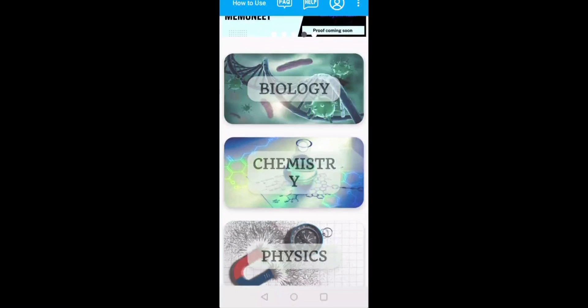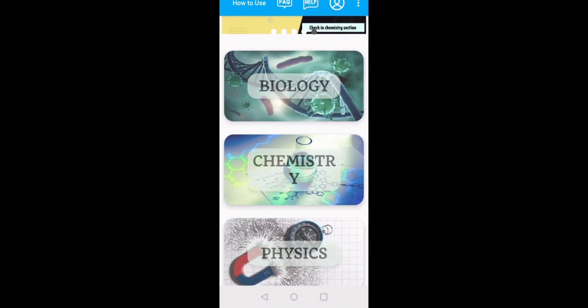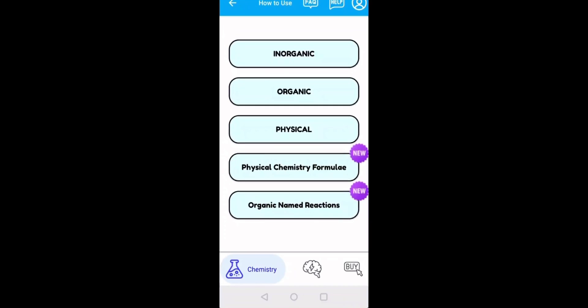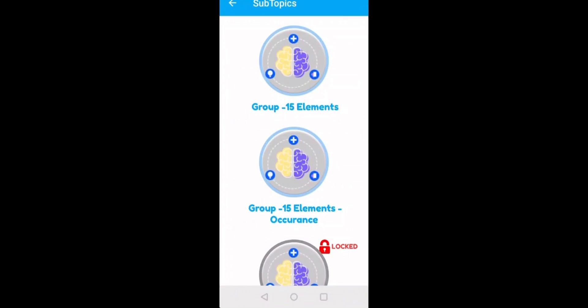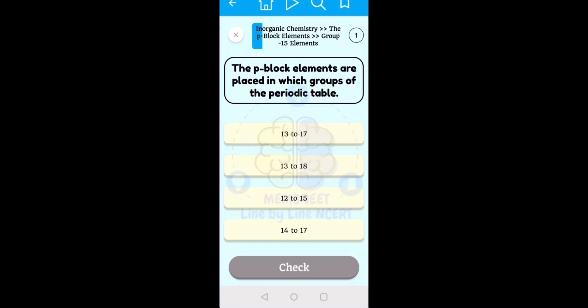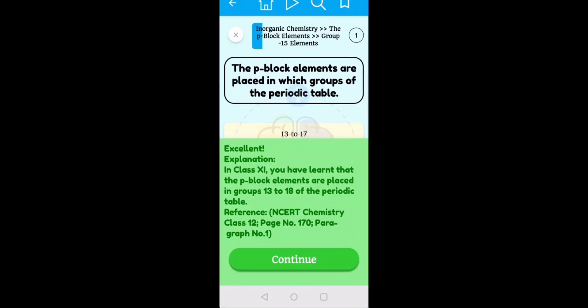So this is the Memonite app and as you can see, it has biology, chemistry and physics. Biologically, it's probably one of the best apps. I've recommended it multiple times, but it's a good app for chemistry as well. So let's say you want to practice inorganic questions. P-block elements. You start from each and every line of NCERT, they have picked. P-block elements are placed in which group of periodic table? I don't remember. It's 13 to 18, right? Yes, let's go. Great.